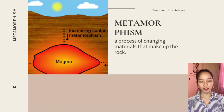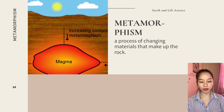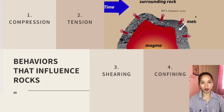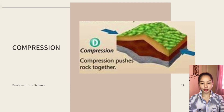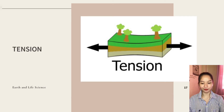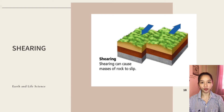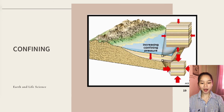The fourth endogenic process is metamorphism — a process of changing the materials that make up a rock. The chemical components and geologic characteristics of the rock change due to exposure to heat and pressure. The behaviors that influence rocks are: compression, where rocks push or squeeze against one another with stress directed toward the center; tension, where rocks pull apart and may separate in opposite directions; shearing, where portions of a plate at the edge may break away in different directions; and confining, where the crust becomes compact.